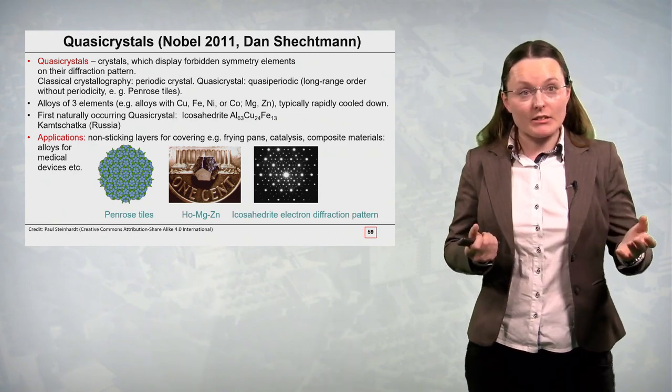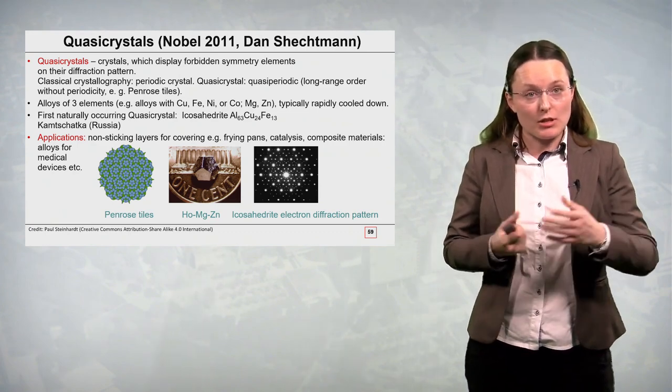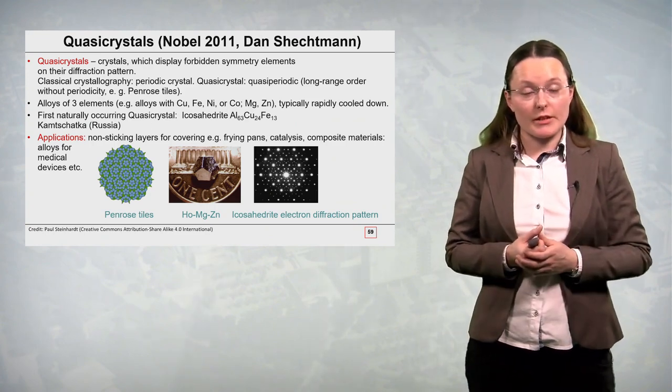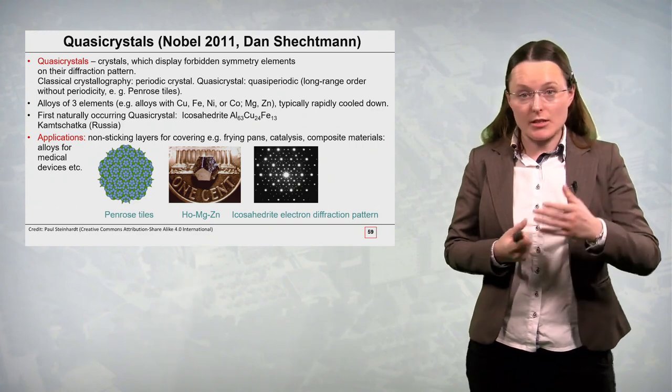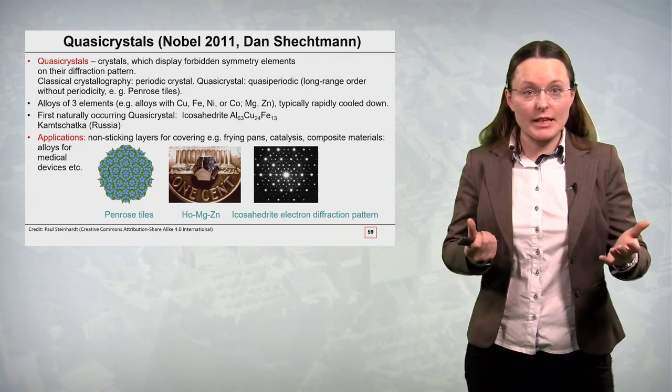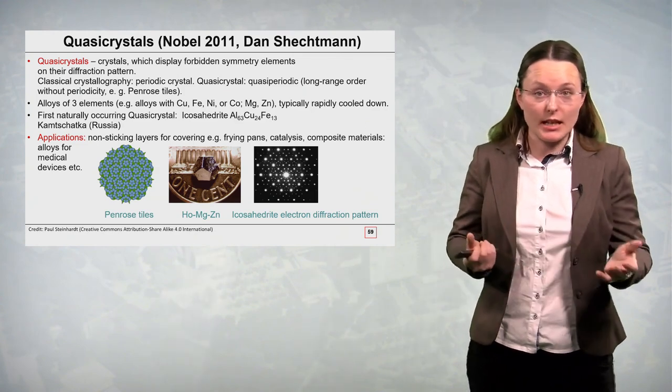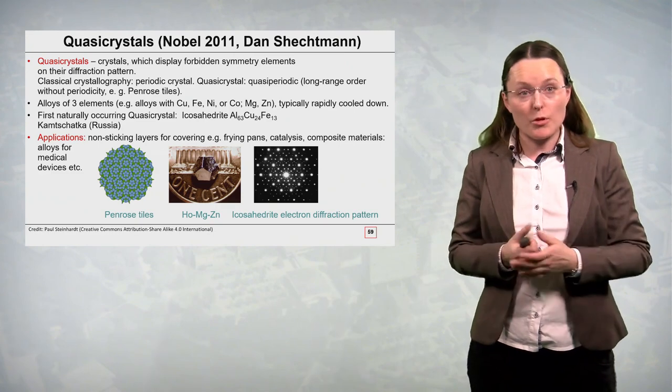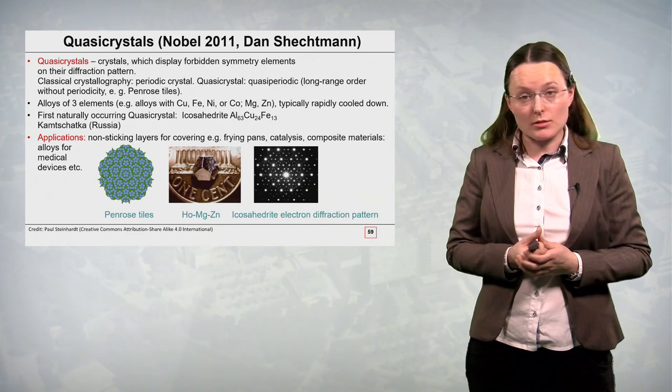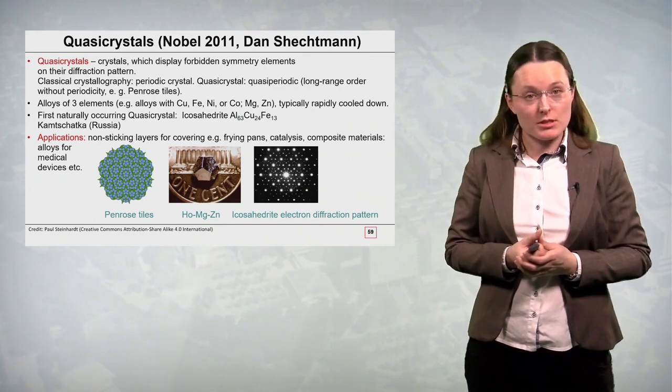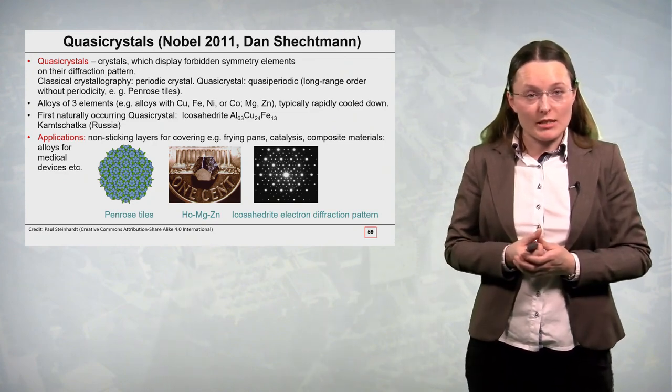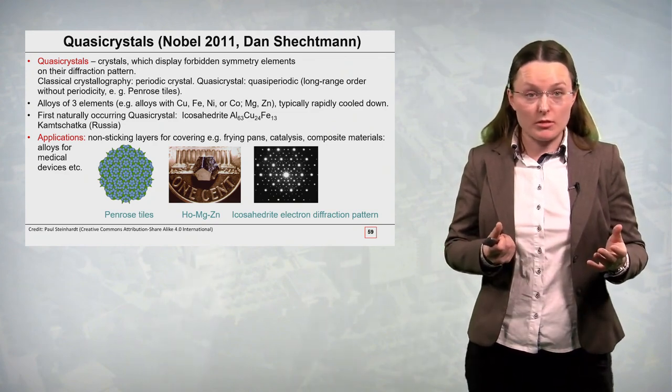It's icosahedrite from peninsula Kamchatka in Russia. The applications of quasi-crystals are for instance owing to their good non-friction properties. Like non-sticking layers for covering of frying pans in catalysis as part of composite materials as alloys for medical devices and so on. But the most important fact is that these quasi-crystals helped us to revise our views on the structure of matter.